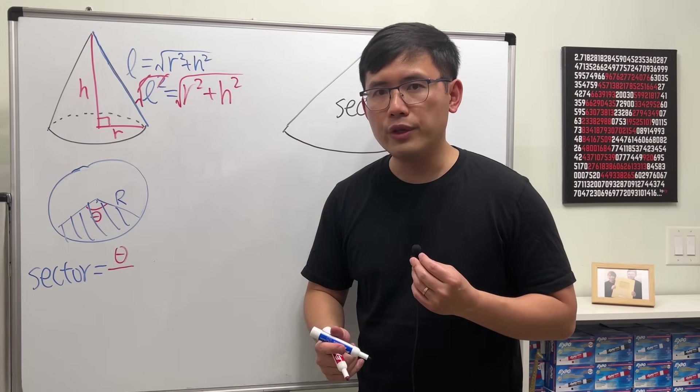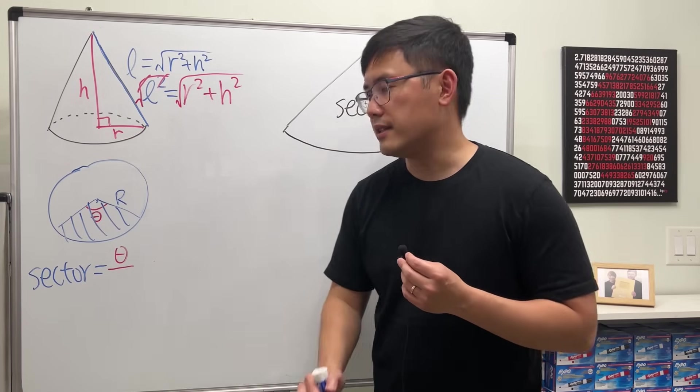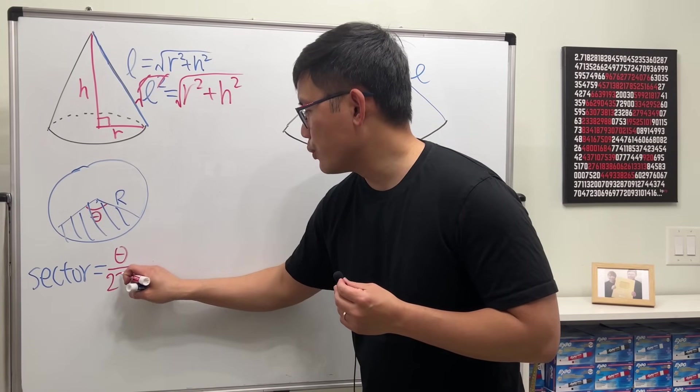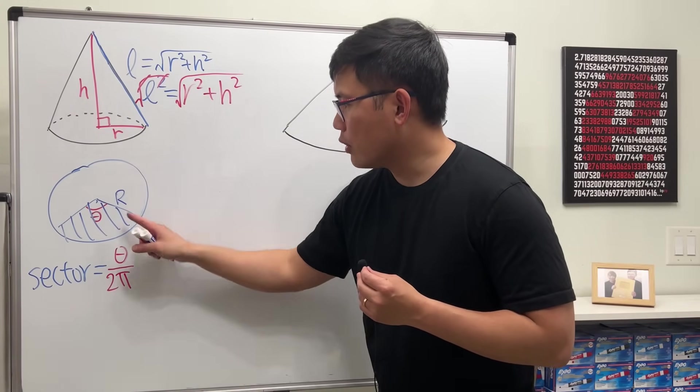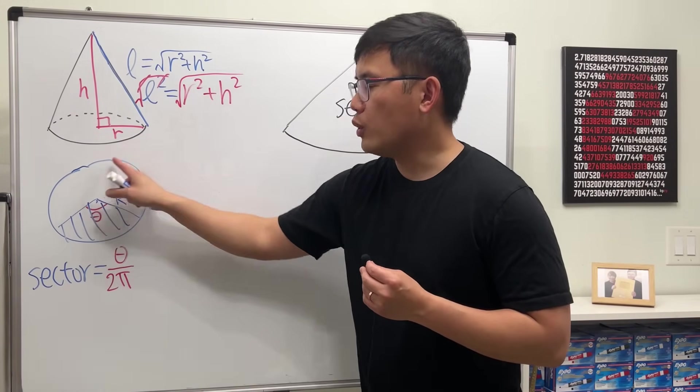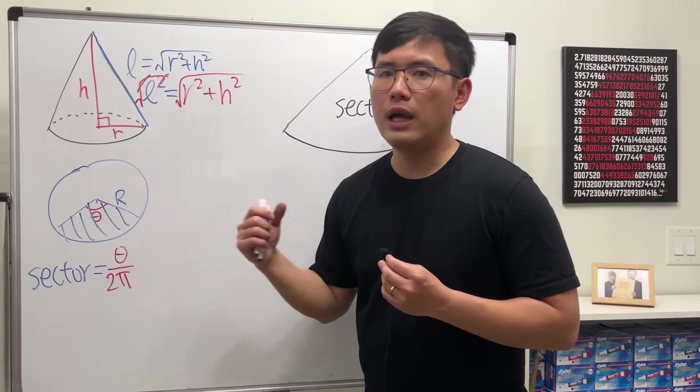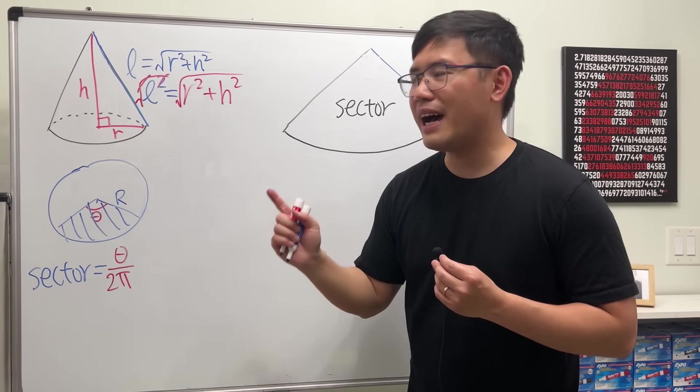So the area of the sector is equal to, it depends on how big the angle is, the angle theta in comparison to the whole angle inside of the circle, which is 360 degrees. But let's put down radians measure, which is 2 pi, and you're going to see why.